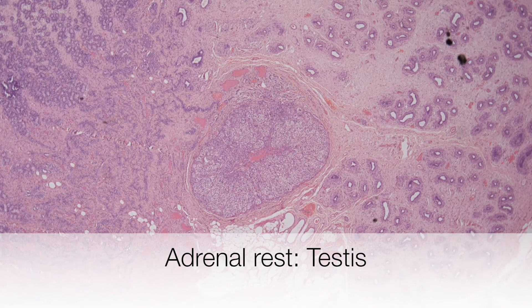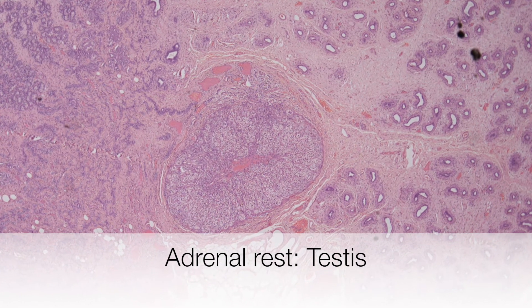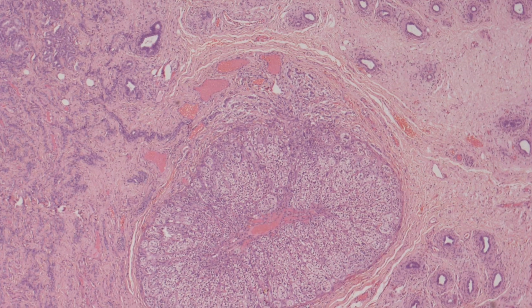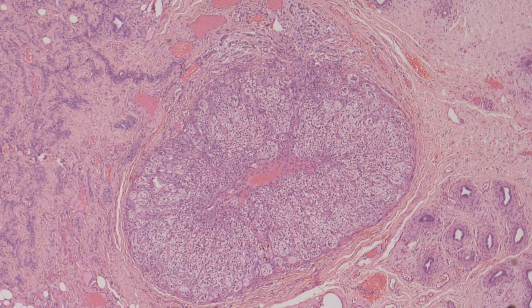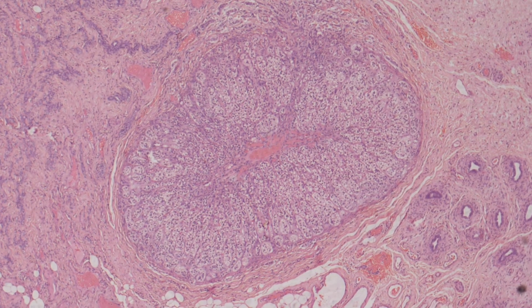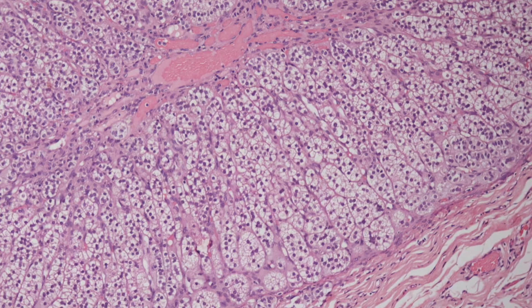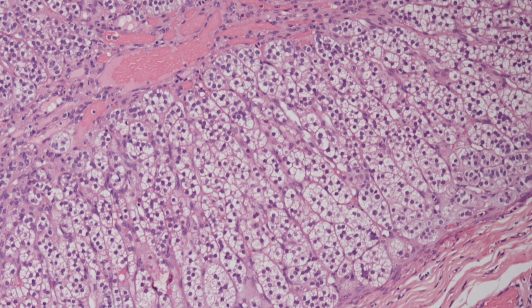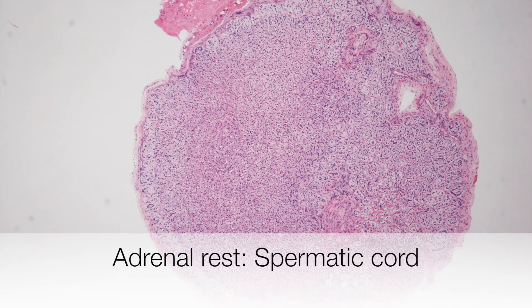This is a low-power view of an adrenocortical rest in the testis, which is situated between the epididymis and the rete. And here is a high-power view. And this is a low-power view of an adrenal rest of the spermatic cord.